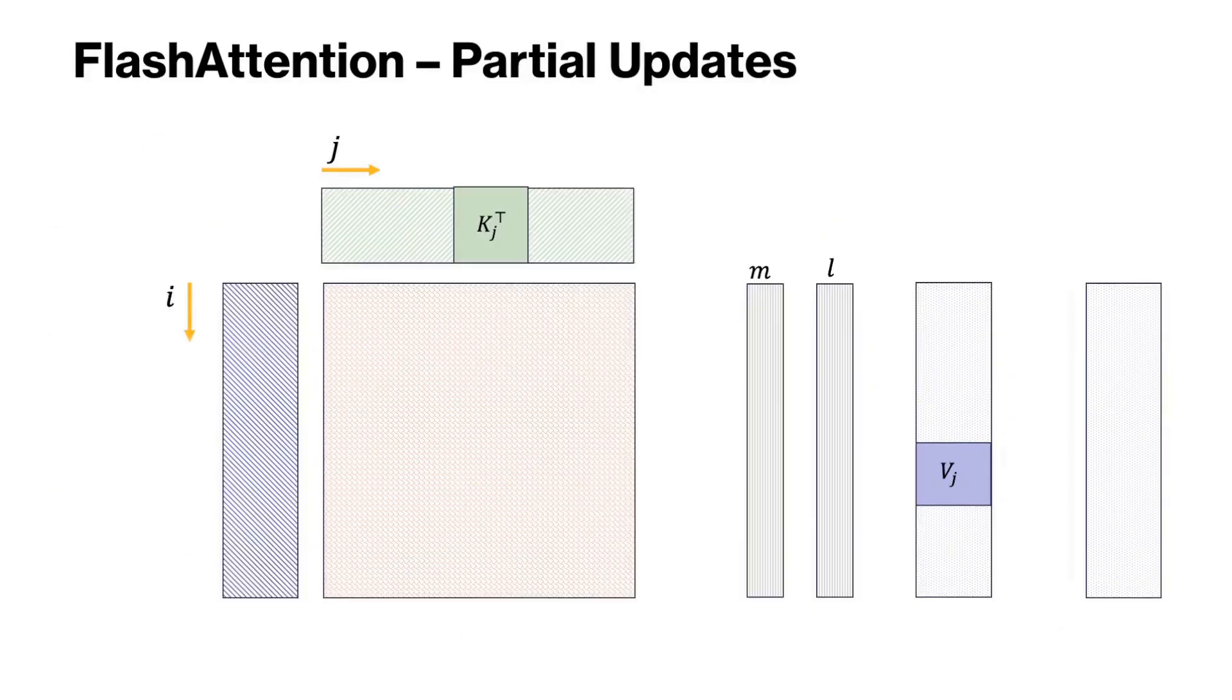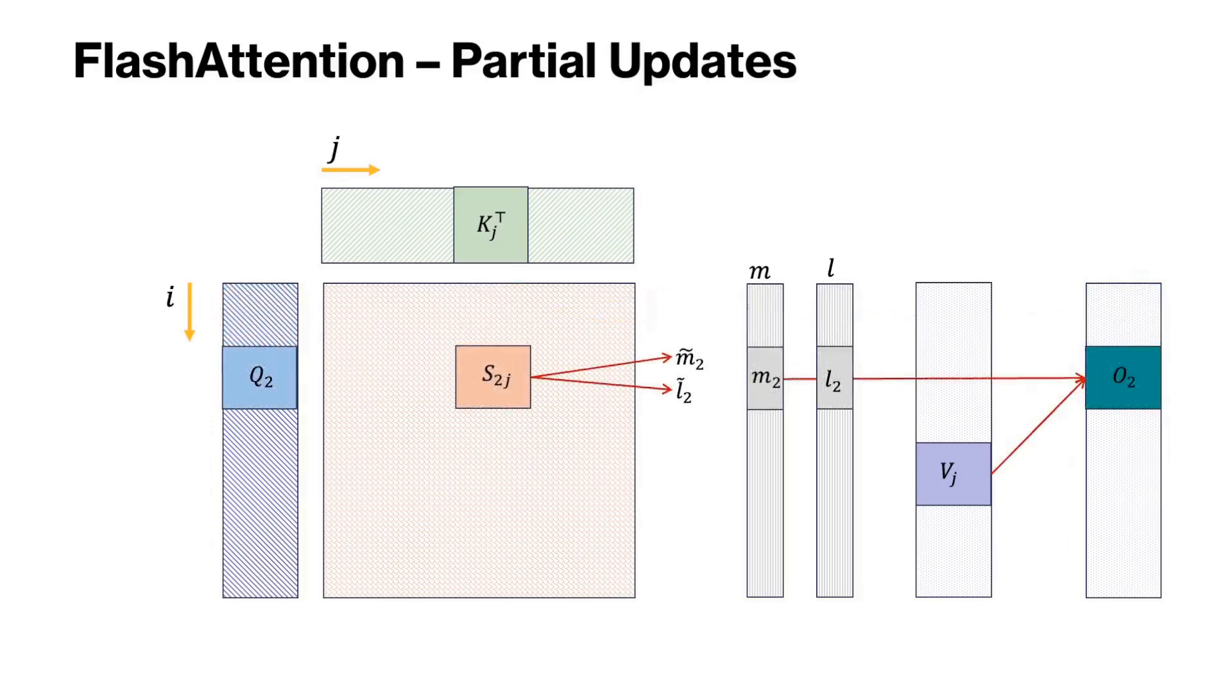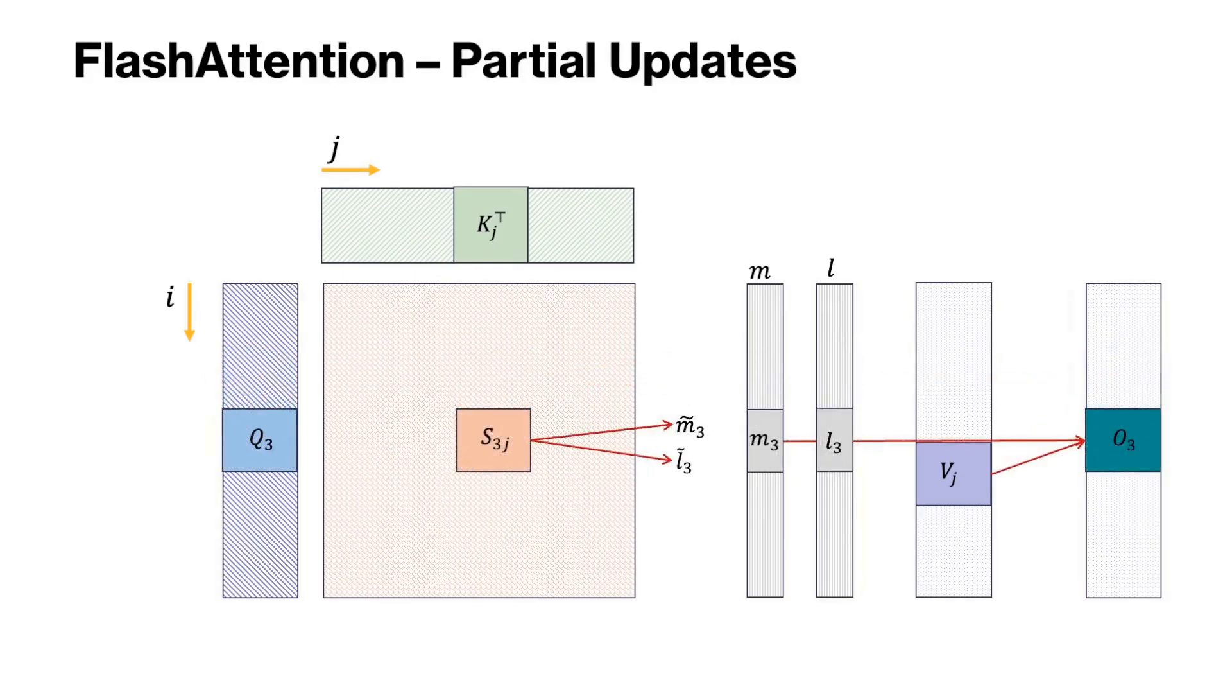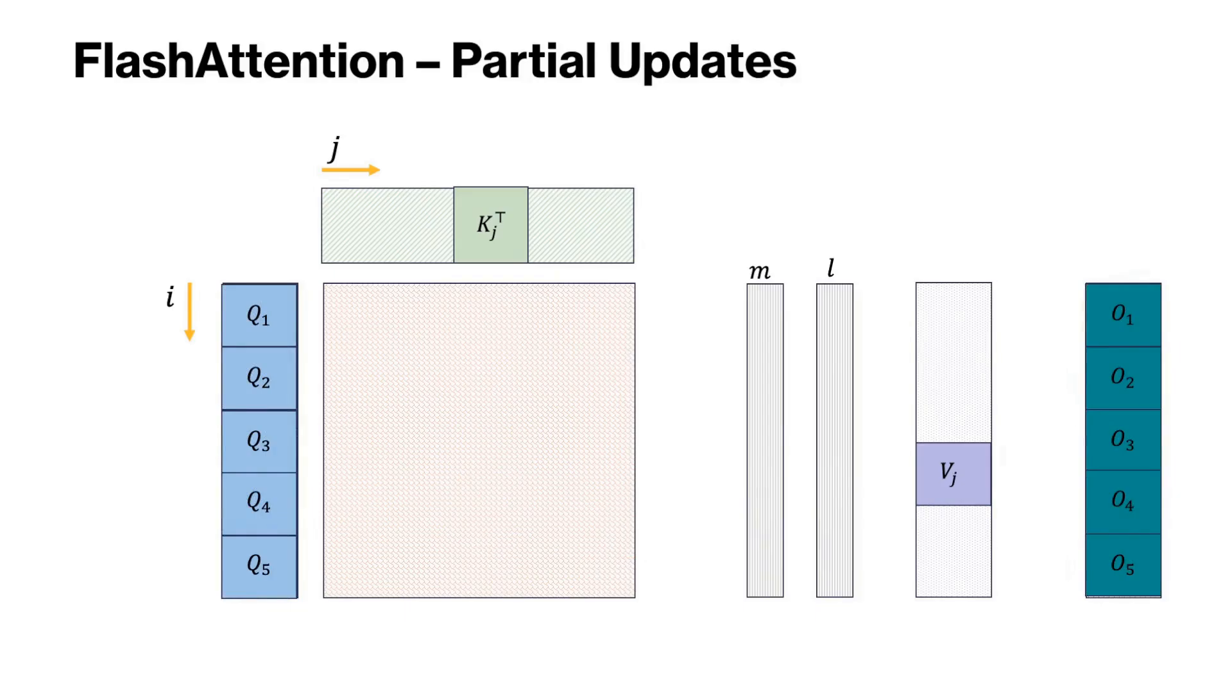Now we perform two loops with the block for kj and vj as the outer loop, and the inner loop is over all blocks of Q. For the fixed blocks kj and vj in the outer loop, we take block q1 and compute s1j and update the blocks m1, l1, as well as o1. Then we move to the second block q2 and make updates to m2, l2, and o2. We continue similarly for all the blocks in Q in the inner loop, and we repeat this for all blocks of j. Once the outer loop is finished, the final matrix O is the output of the attention.